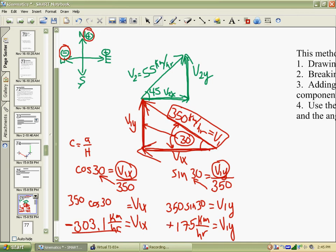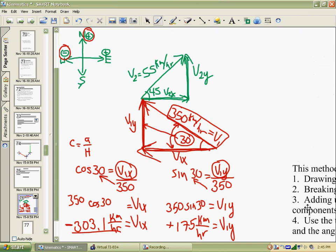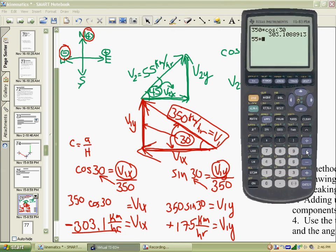I'm going to switch over to the color green and do the upper triangle. For 45, we're going to do cos and sine 45. Cosine of 45 is the adjacent side V2x over the hypotenuse, which is 55. So to get V2x, we cross multiply. V2x is going to be 55 times the cosine of 45. That's 0.7071 times 55. 55 times cos 45 gives us 38.9.